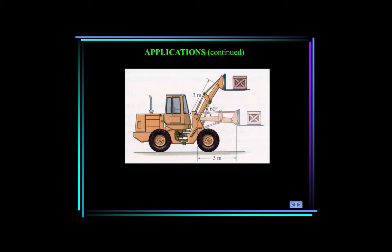Here's a tractor raising some cargo. The cargo will undergo curvilinear translation if the forks do not rotate. If the load is raised too quickly, will the crate slide to the left or the right? How fast can we raise the load before the crate slides? The equations of motion for planar rigid bodies can be applied to solve these problems.